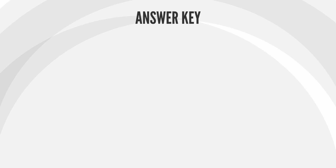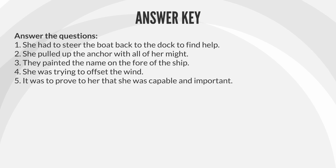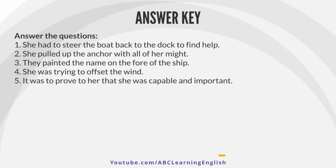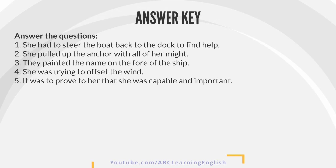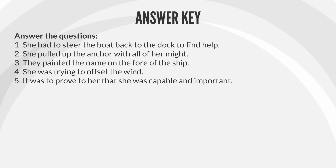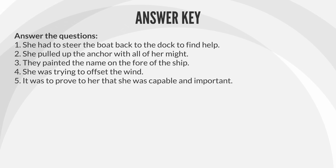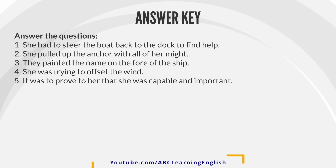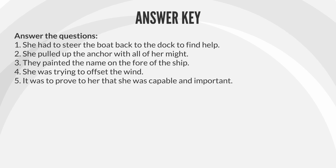Answer key — Answer the questions. 1. She had to steer the boat back to the dock to find help. 2. She pulled up the anchor with all of her might. 3. They painted the name on the fore of the ship. 4. She was trying to offset the wind. 5. It was to prove to her that she was capable and important.